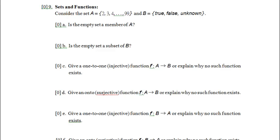Welcome to problem 9 of the computer science 121 2013 winter 2 practice final exam. So sets and functions. Consider the set A, which is the set containing 2, 3, 4, dot dot dot, 99.